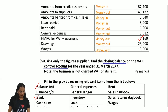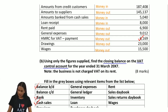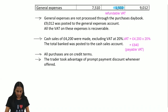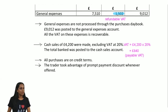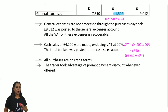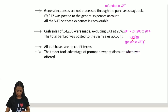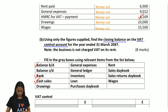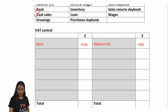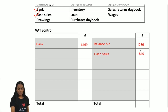Another item is cash sales. We calculated that the VAT collected on cash sales is £840. If you collect VAT on goods sold, this is payable to the authorities, so £840 is going to be shown on the credit side of the VAT control account: cash sales, £840 — the amount due to the authorities.